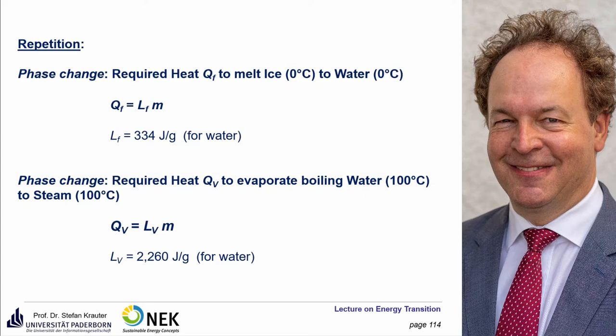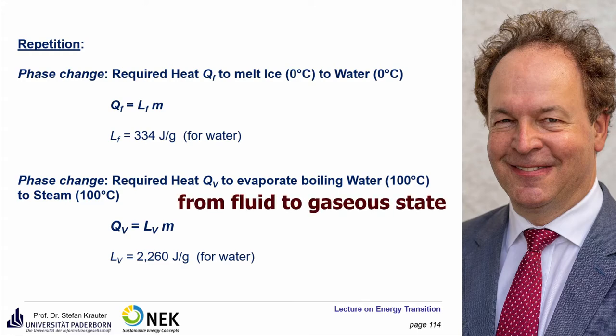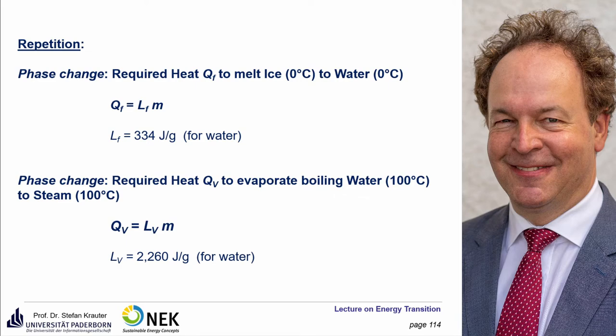There's another phase change from liquid to steam or gas. This is called QV for evaporation, and we stay at the temperature of 100 degrees Celsius. The formula is Q equals LV times M, and the constant LV is 2,260 joule per gram for water. Comparing those numbers, you can see that it needs much more energy to evaporate water at 100 degrees Celsius rather than to melt ice.